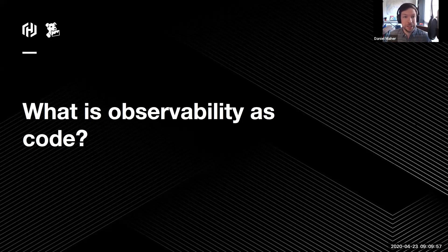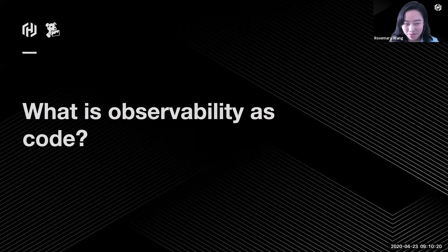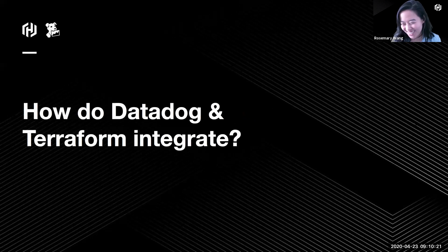For those familiar with DevOps principles, there's the CAMS acronym — Culture, Automation, Measurement, and Sharing. The A, M, and S are a lot of what we're covering today. We're talking about the proliferation of services and the complexity of observability scaling almost logarithmically. What we're looking at today is how do we automate that, how do we standardize it, make it manageable, and how do we share it — because we don't generally work in a vacuum, and we need a shared understanding of what's going on.